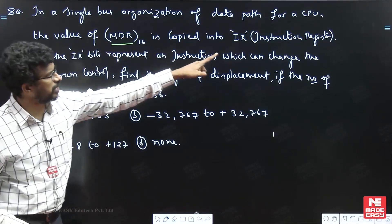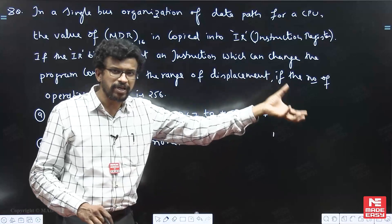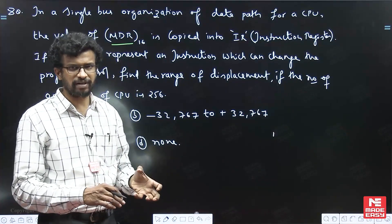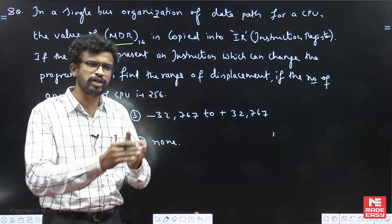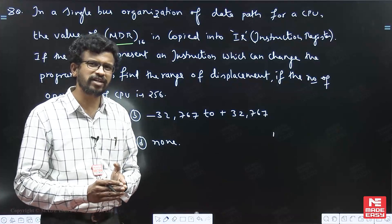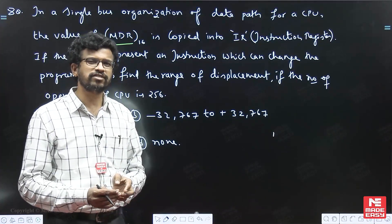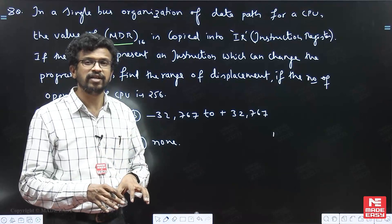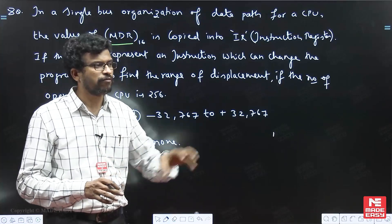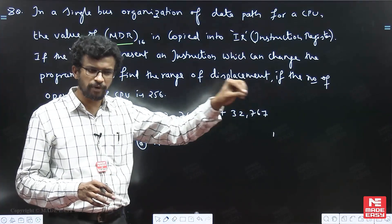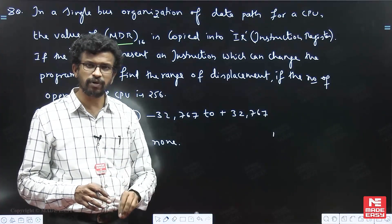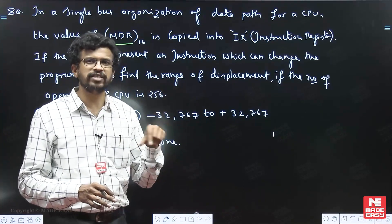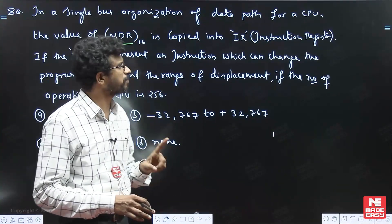MDR is copied into IR. From memory, you brought something into MDR and this value is going to IR — the Instruction Register. The instruction register contains the opcode of the present instruction. It means for that particular instruction, the opcode is first fetched into IR, so the instruction code is there in the IR.